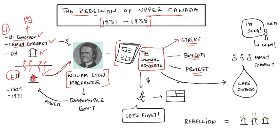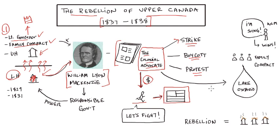However, his newspaper was not doing very well, so he was losing a lot of money and going into debt. Because he didn't have the money to pay his debts, he ran away to the United States for a time so that the debt collectors couldn't find him.